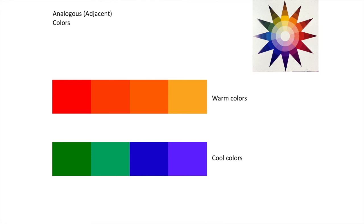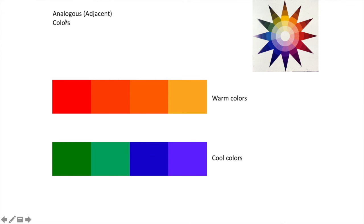When we refer to colors that are close to or adjacent to each other on the color wheel, we refer to them as analogous. Johannes Itten in particular refers to them as analogous; Faber Biron calls them adjacent colors. So connect the words analogous and adjacent together when referring to groups of colors that are next to each other on the color wheel.